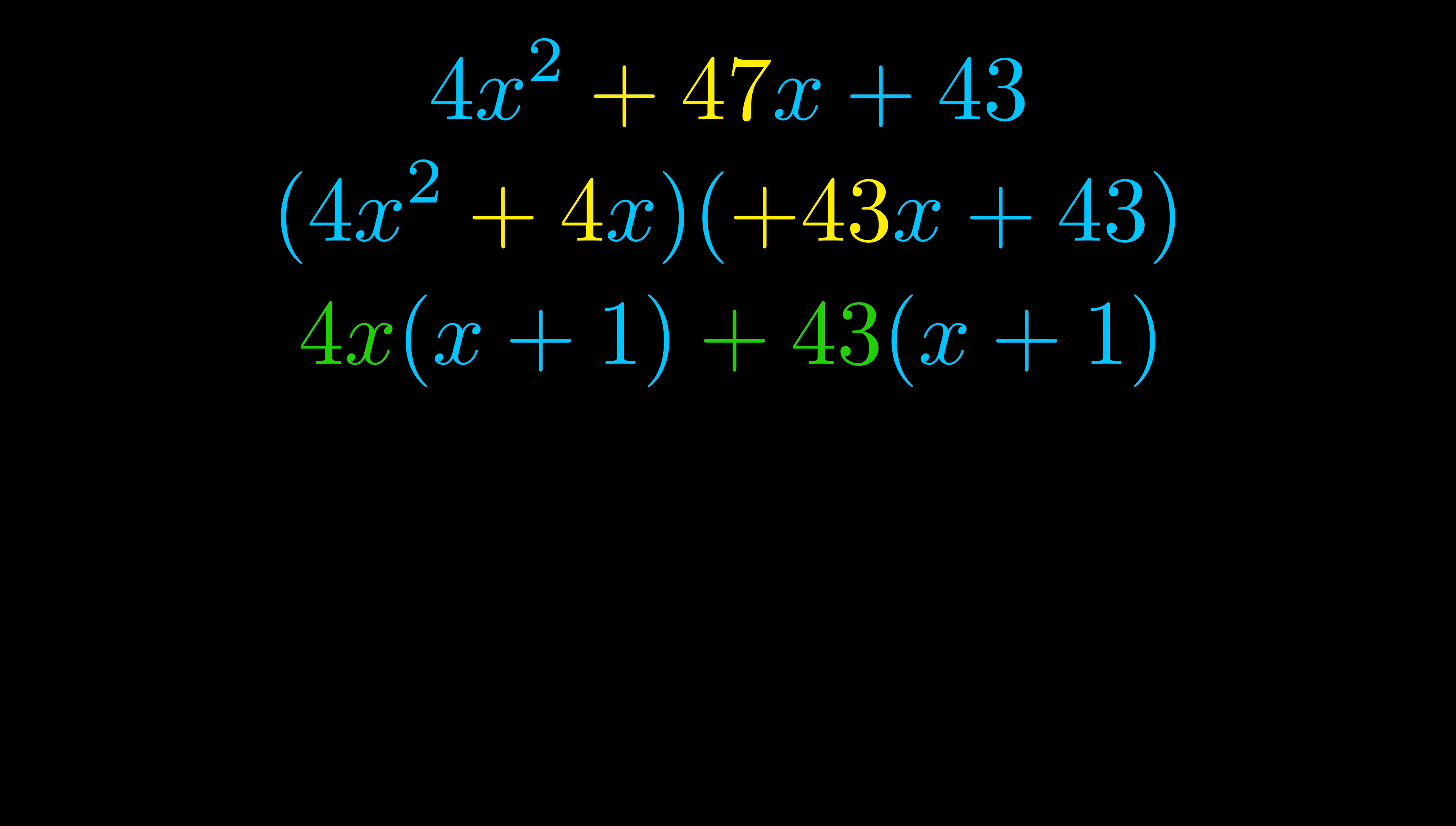Notice also how what remains inside of the parentheses is the same in both cases. The blue values are the same. Those blue values will become one of our factors and we will combine the two green values, the GCFs that we pulled out, to get the other one. And that is our fully factored equation.